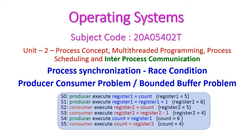Hello friends, welcome to operating system class. In this class we will start a new chapter called inter-process communication, otherwise called IPC, from the second unit. This is another important chapter from the second unit. Here we will see what is process synchronization, how race conditions occur, and the race condition is explained using the producer-consumer problem and the bounded buffer problem.